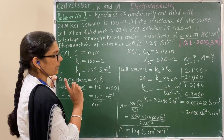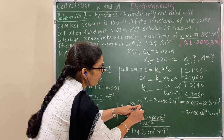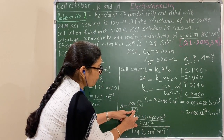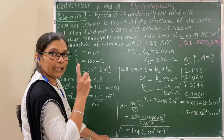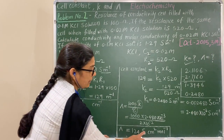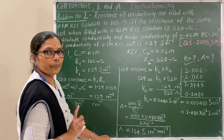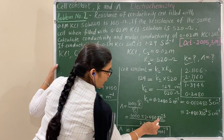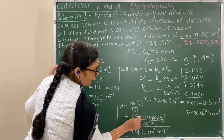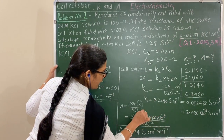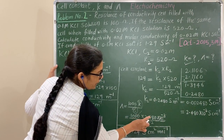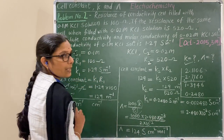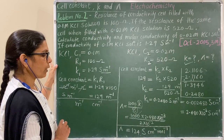With conductivity in Siemens per centimeter and molar concentration in mol per dm³, use the formula: lambda = 1000 × conductivity / concentration. The units cancel appropriately. Dividing and accounting for powers of ten gives the molar conductivity answer, with units of Siemens centimeter squared per mole.